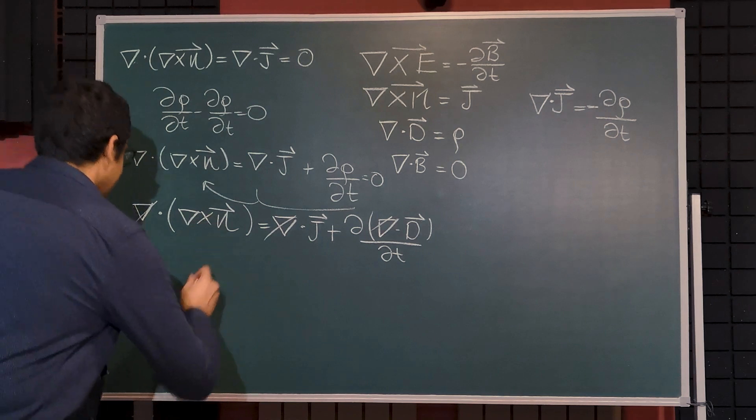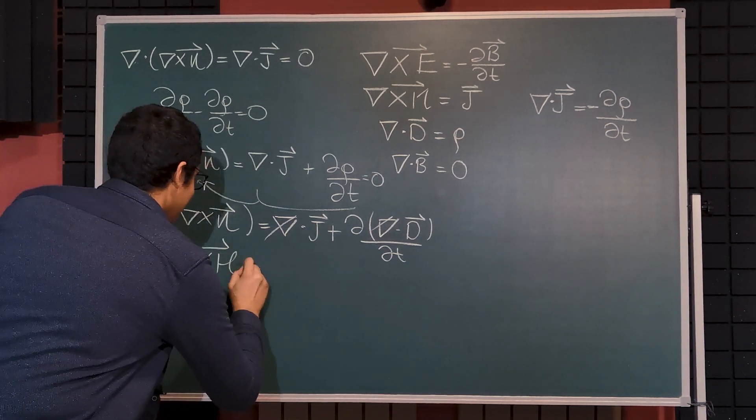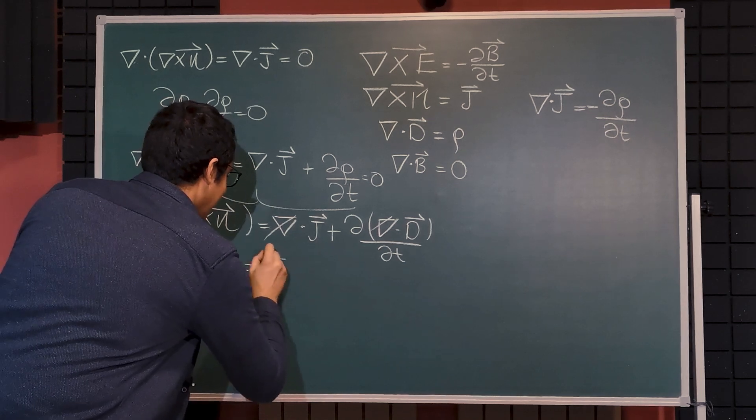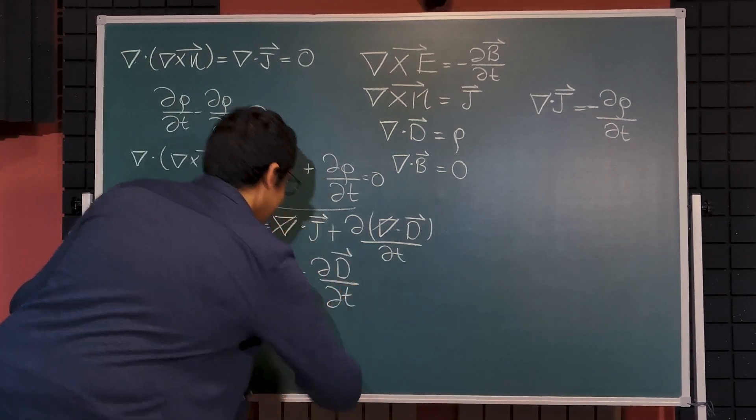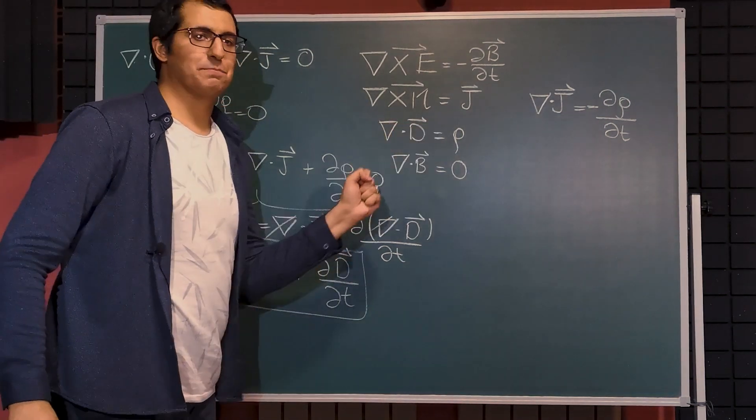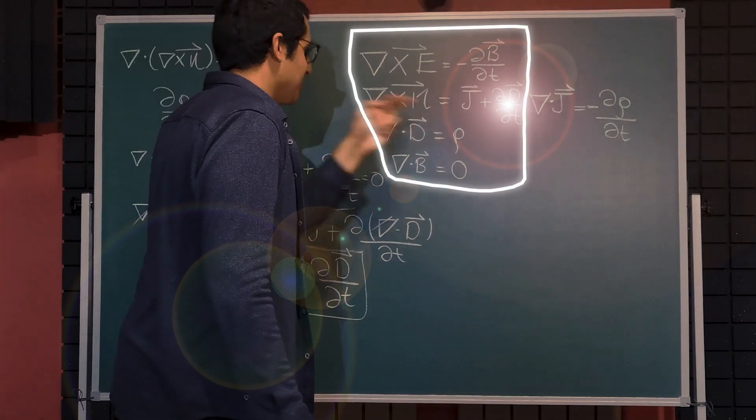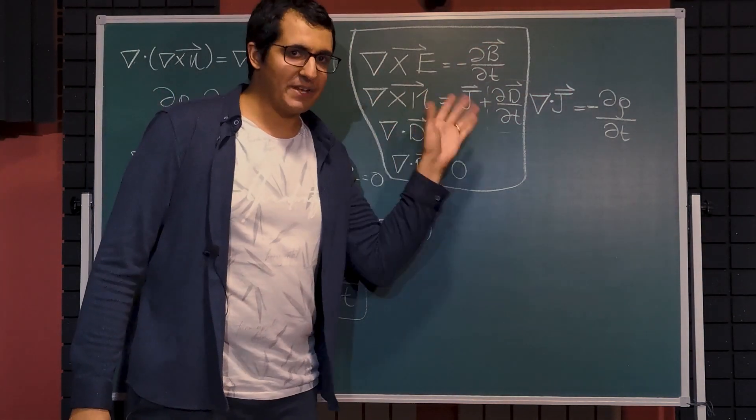And we are left with curl of H is equal to the current density plus the time rate of change of the electric flux density. And this is the missing piece of Maxwell's equations. So these are the Maxwell's equations and this is the intelligence of James Clark Maxwell.